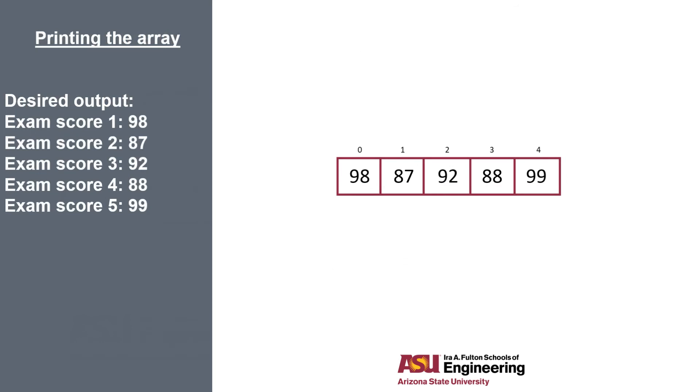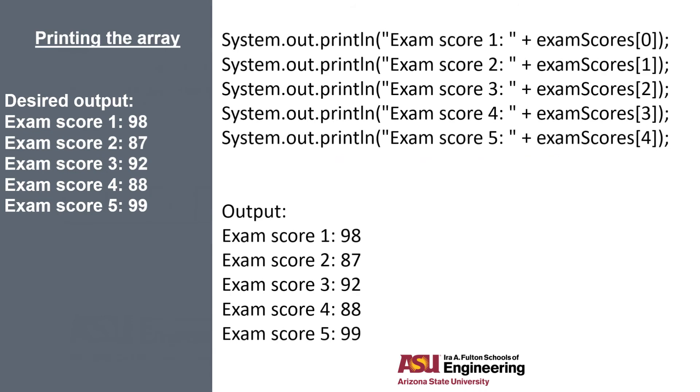Now that we have our array of exam scores initialized, we can talk about how to print them out nicely. On the left side is our desired output. We want to number the exams from 1 to 5 and have the score printed after. So one thing we could do is write 5 different print statements. And this will work just fine. But it looks clunky and if you had to print hundreds or thousands of grades like this, it would not be fun.